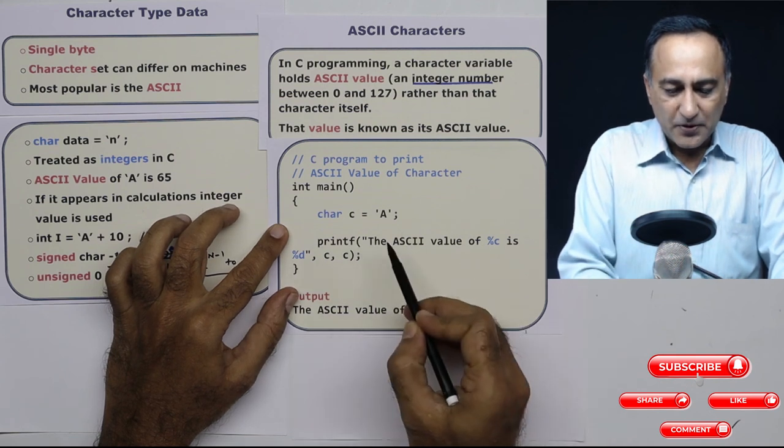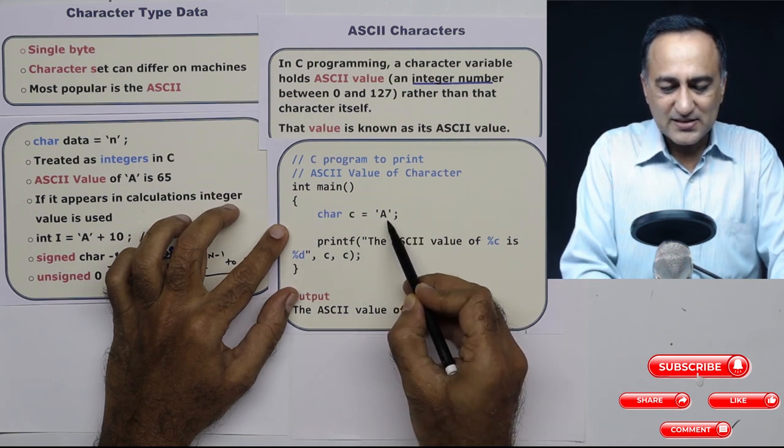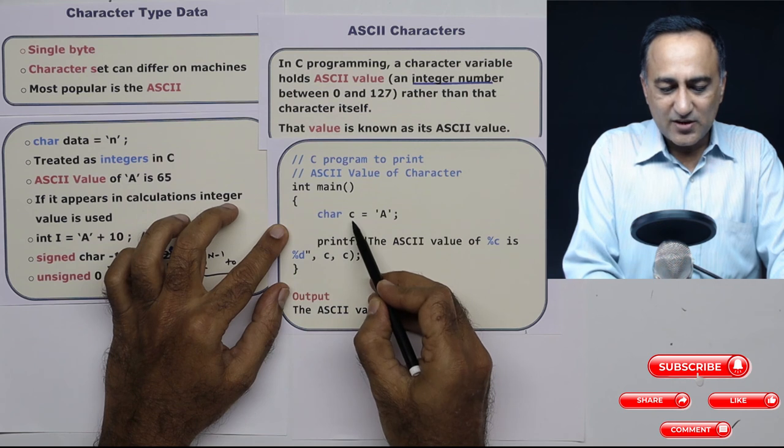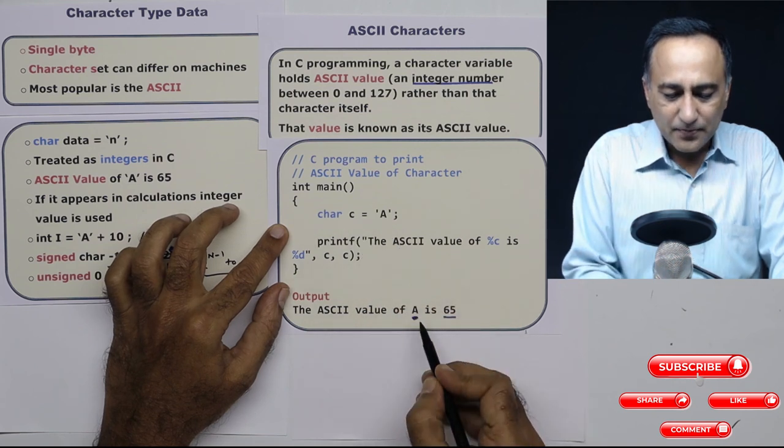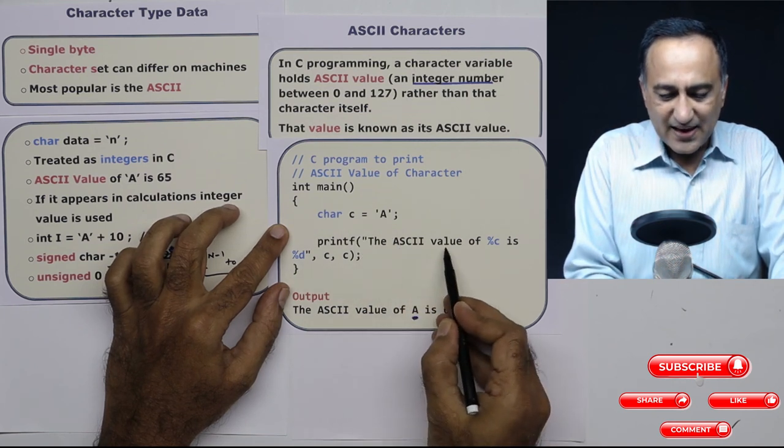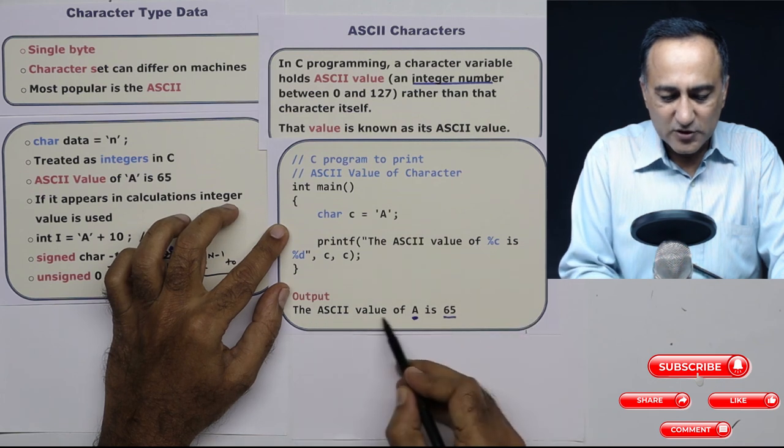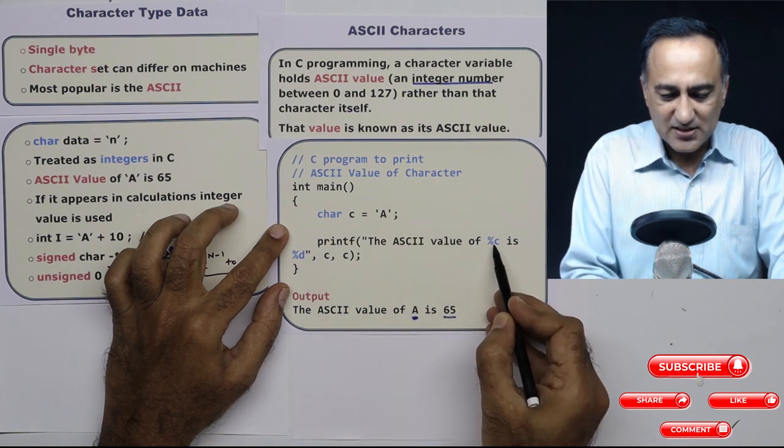So I've initialized C to A. Now what I'm saying is the ASCII value of... so till here, it's going to print as it is where it is percentage C. Since C represents characters, it's going to print A.